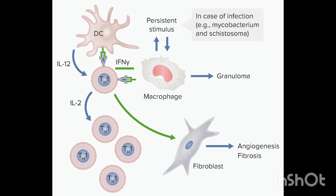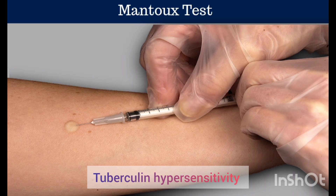TH1 cells release cytokines like interferon-gamma, which attract macrophages and cytotoxic T cells to destroy the antigen, leading to tissue inflammation and granuloma formation. Fibrosis can also occur by activation of fibroblasts, therefore leading to tissue damage.